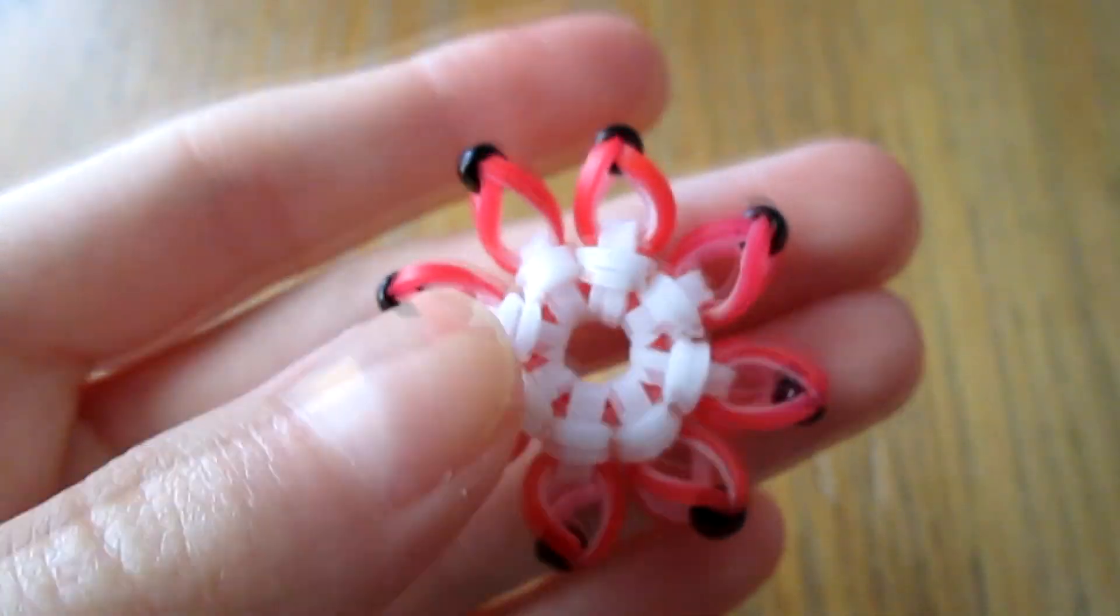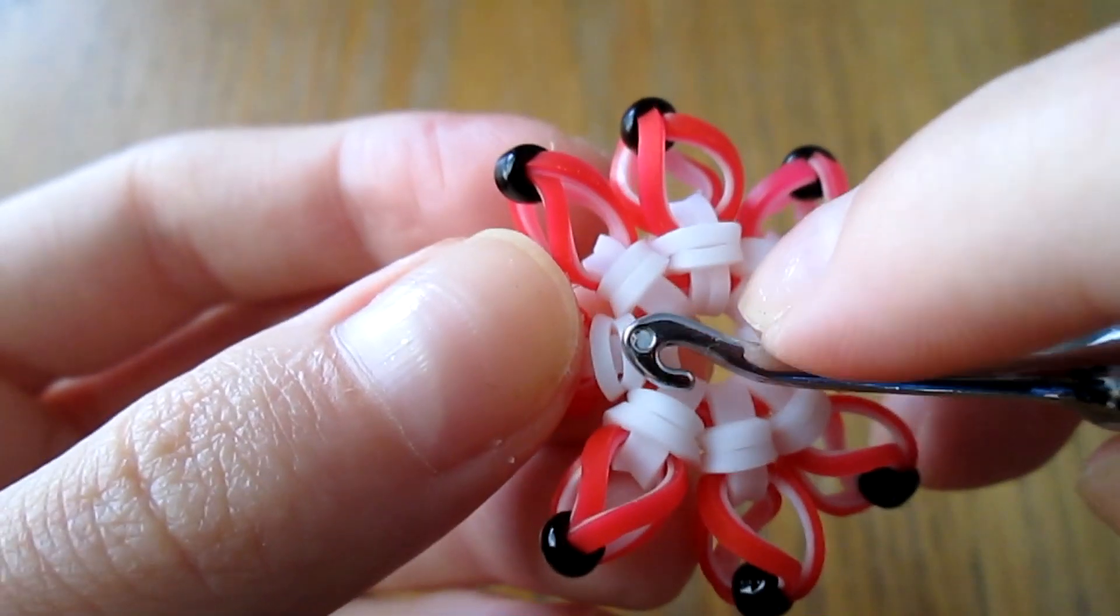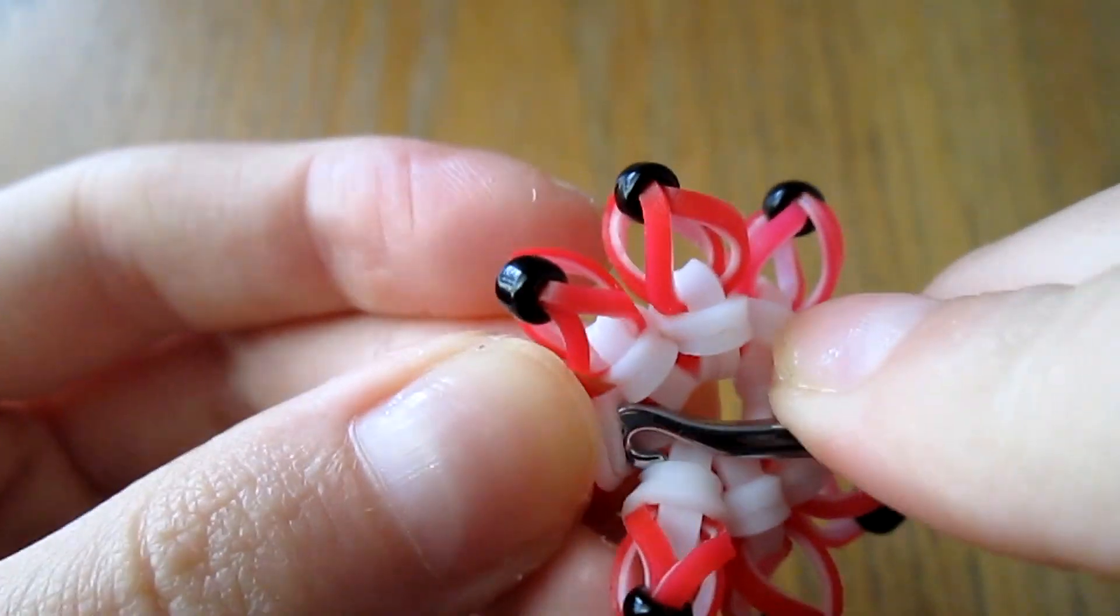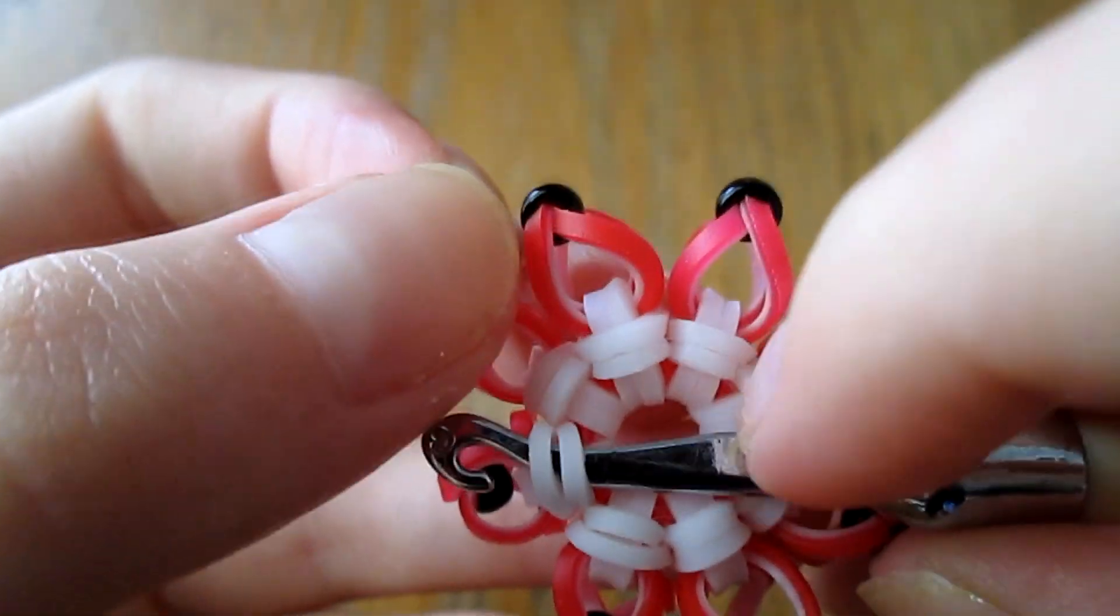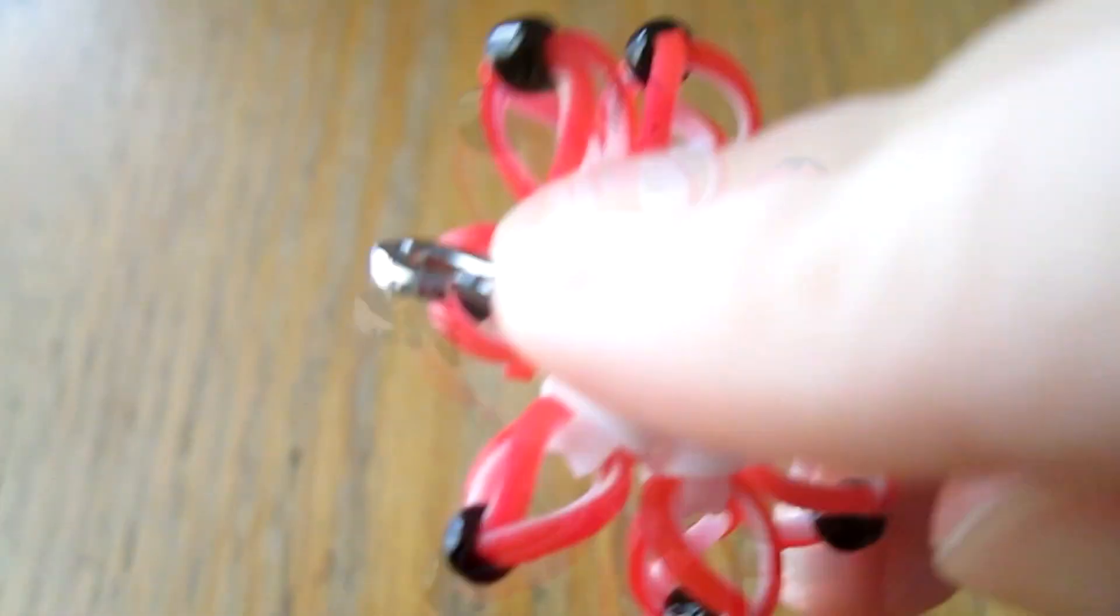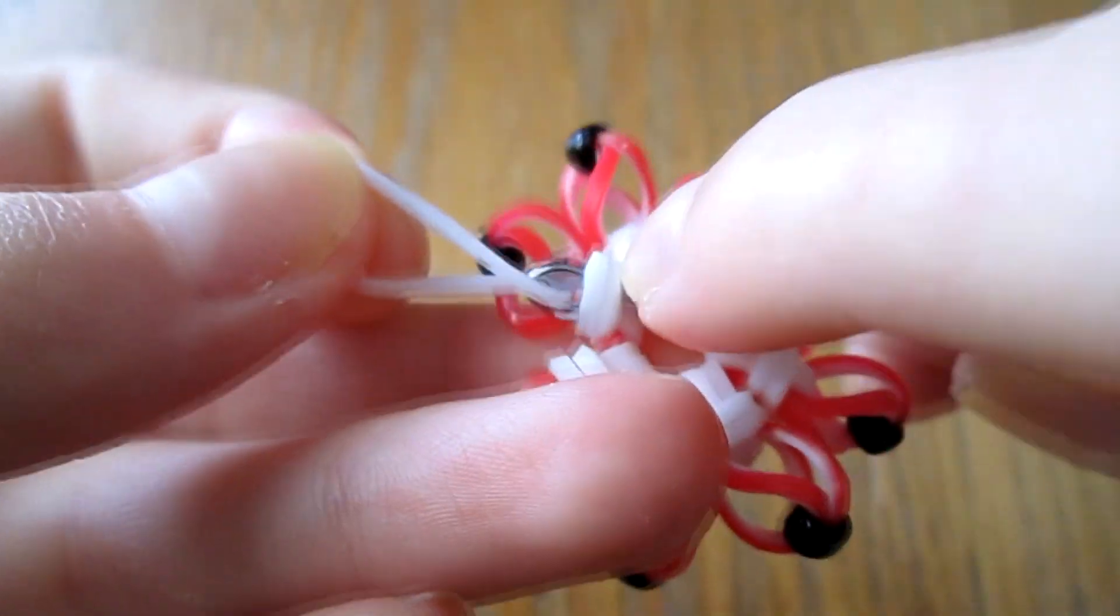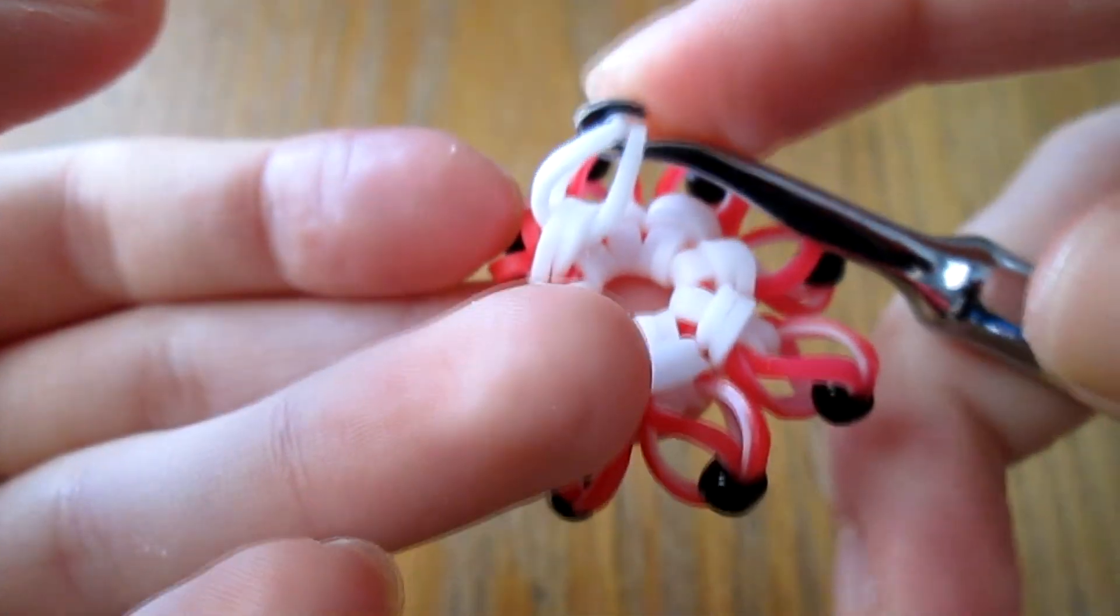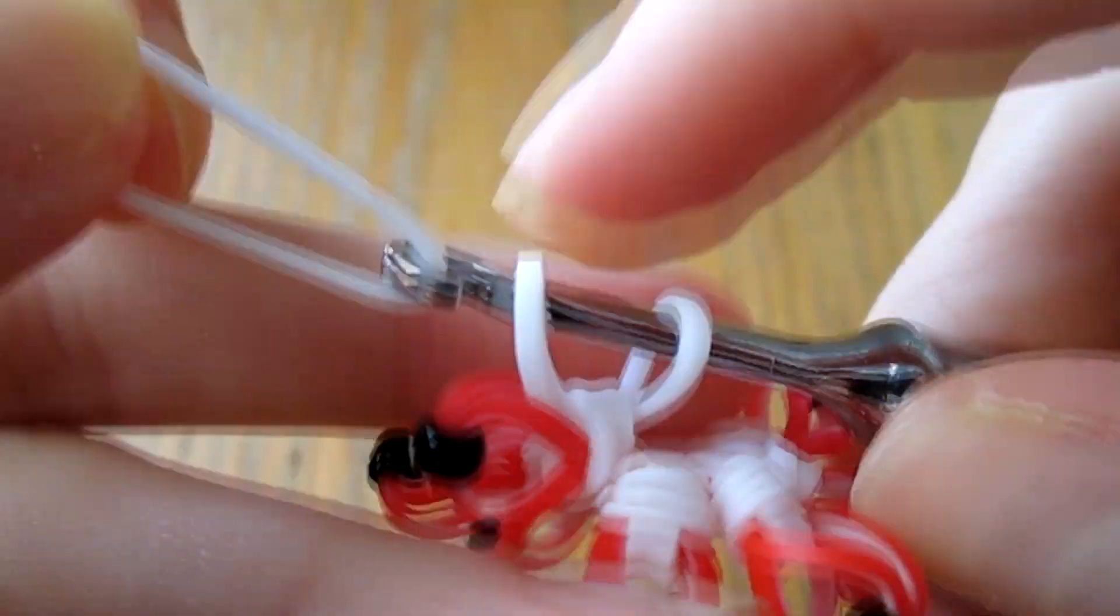I'm going to start off by showing the ring. You're going to take your hook and go into any one of these little knot top things here. There should be two loops. You just put your hook through it, and then you pull a white band through it like that, and then pull two more white bands through that.